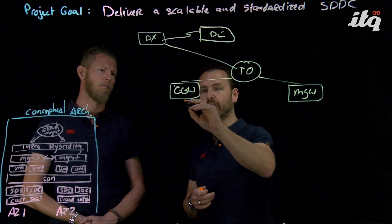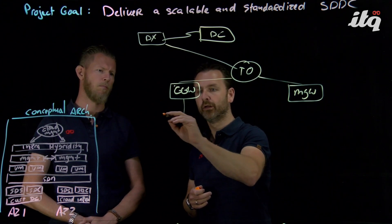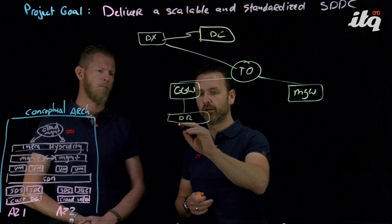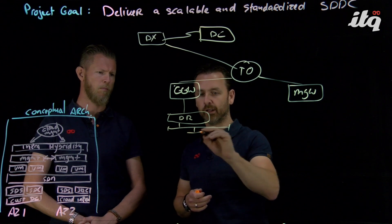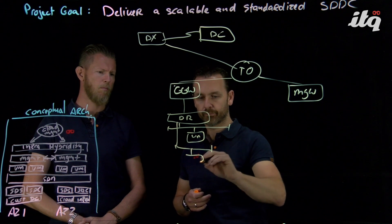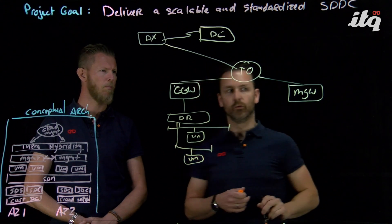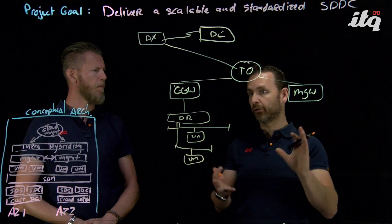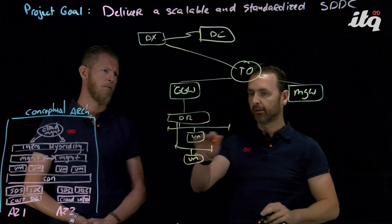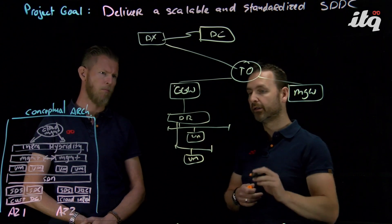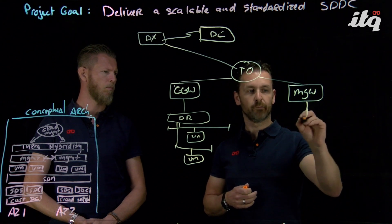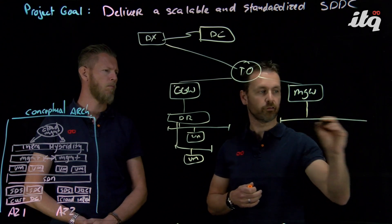So if we take a look at the compute gateway for example, this is where all the distributed routing is being done. So I'm just calling it DR and here we have all our logical networks containing our virtual machines. So this is really just a standard VMware Cloud on AWS solution. We have a compute gateway, distributed routing, logical switches connecting to the distributed router and so far so good.